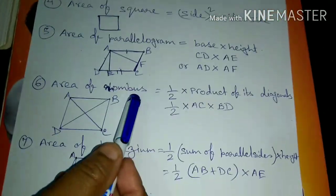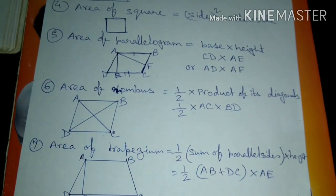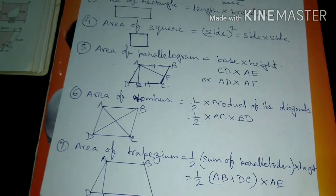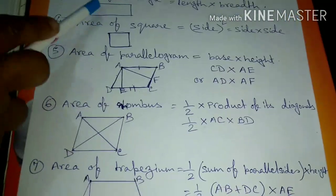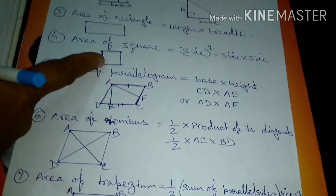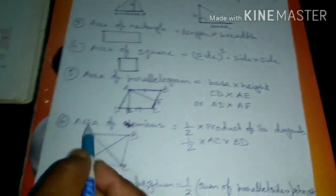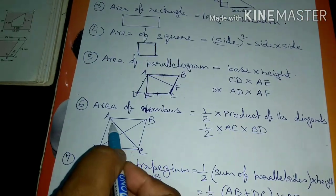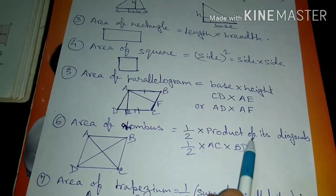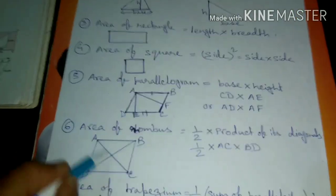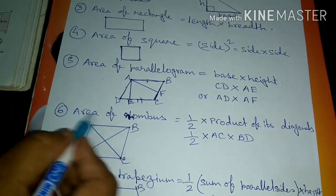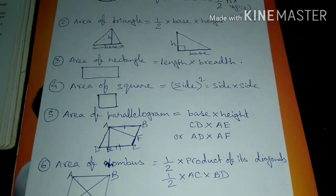Next, what is area of rhombus? Rhombus is like a tilted square — all sides are equal, just like a square. But in a square the angles are 90 degrees, whereas in a rhombus it is tilted so the angles are not 90 degrees. That is the only difference between square and rhombus. Area of rhombus is half into product of its diagonals. So if AC and BD are the diagonals, area of rhombus is half into AC into BD.